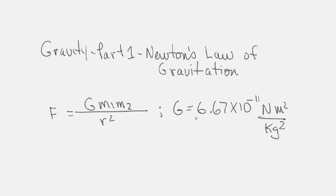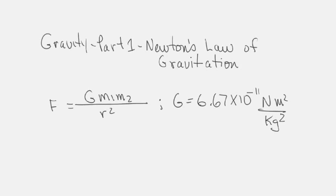The universal gravitational constant G was calculated by a scientist by the name of Kavanaugh, and he did it empirically.